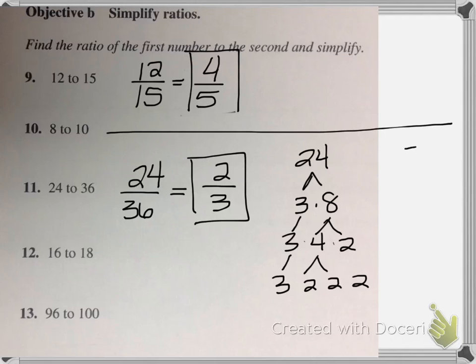And then I can break down 36. I'm just going to say 6 and 6. And then I know that that's 2 and 3, so that's 2 and 3, and 2 and 3.